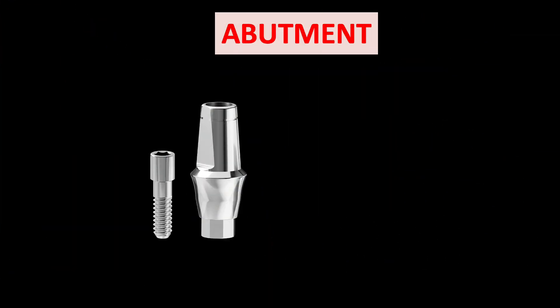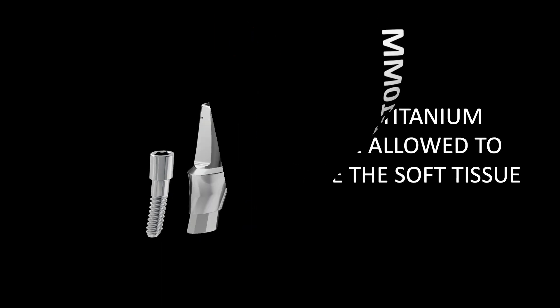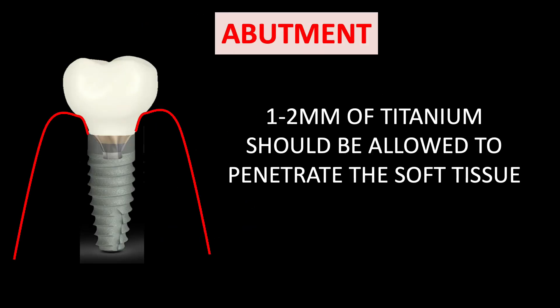Some important points related to abutment selection: the abutment height should range between 1 to 10 mm, and 1 to 2 mm of the titanium abutment should be allowed to penetrate the soft tissue so that there are less chances of peri-implantitis, as you can see in the figure.